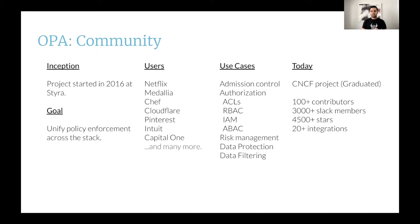OPA is a CNCF graduated project. It has more than 100 contributors on GitHub. It has a healthy Slack community of more than 3,000 members. It's been starred more than 4,500 times on GitHub, and it's integrated with more than 20 of the most famous open source projects out there, some of which we'll see later on.